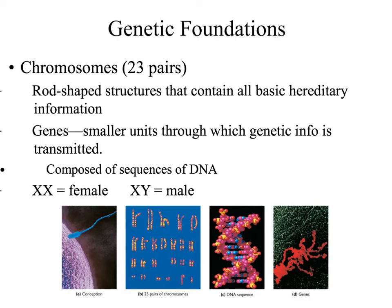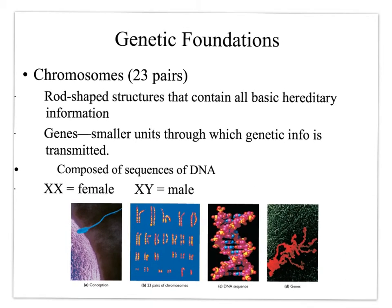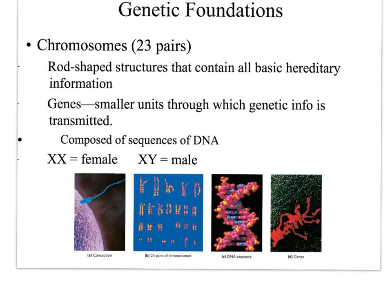Individuals who have 46 are considered to be the standard, but it's not always a given. As individuals have intercourse, typically about 36 hours after intercourse, depending on the woman's menstrual cycle, there will be a conception. Conception is depicted here in this picture at the bottom, where you have the sperm going into the egg, and that's when conception takes place.